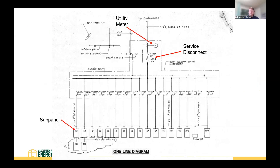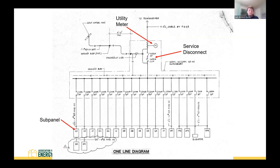The single line diagram from the actual building plans shows a setup more similar to single family: service coming in, then a meter, then a 1600 amp service disconnect, spreading out to individual sub panels. With 122 units at the site, there is not a sub panel for each dwelling unit — sub panels are located in the hallway and serve multiple dwelling units.